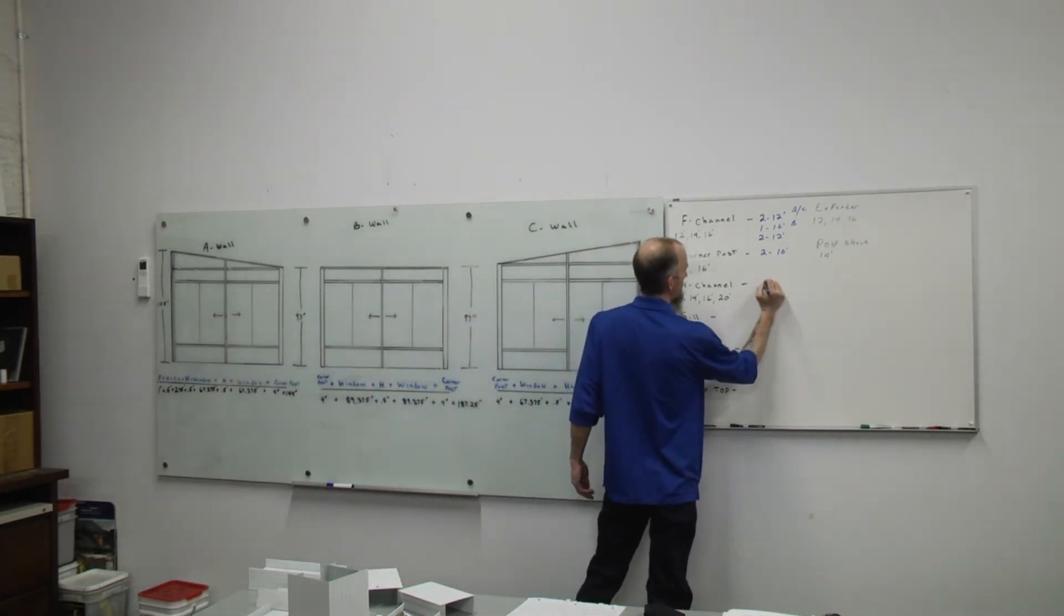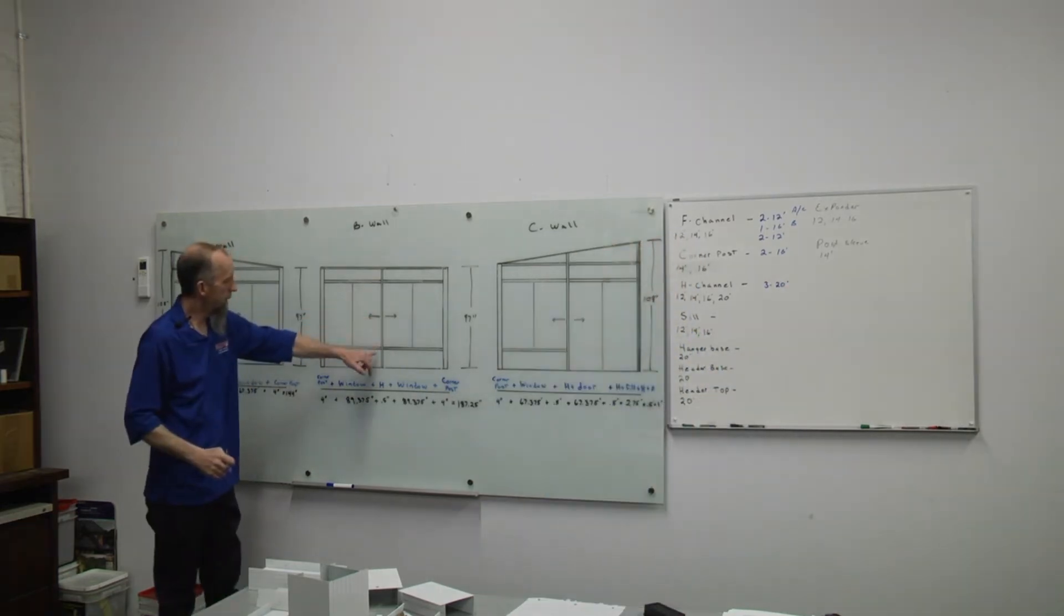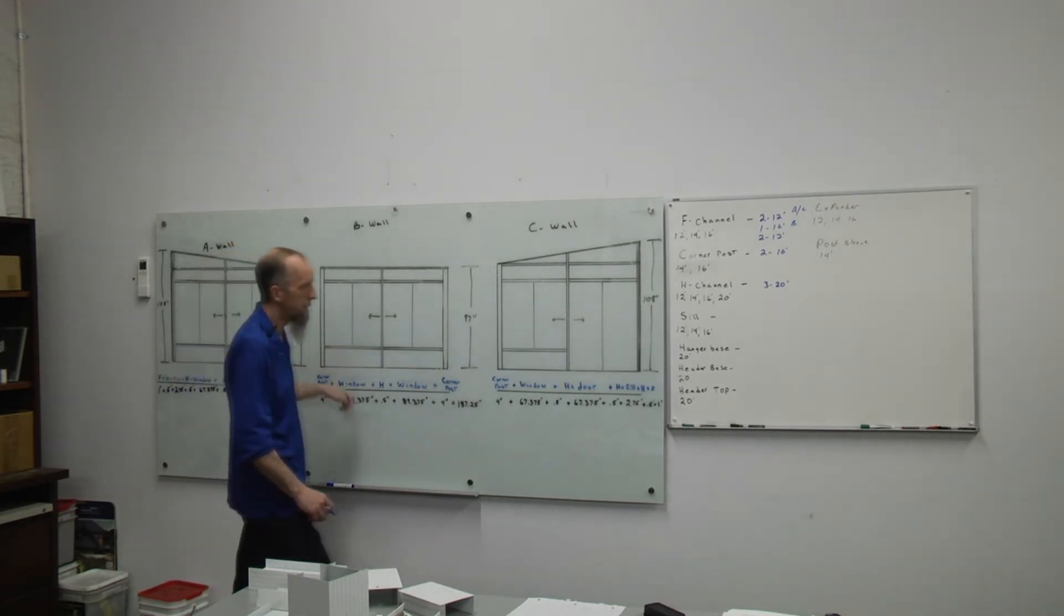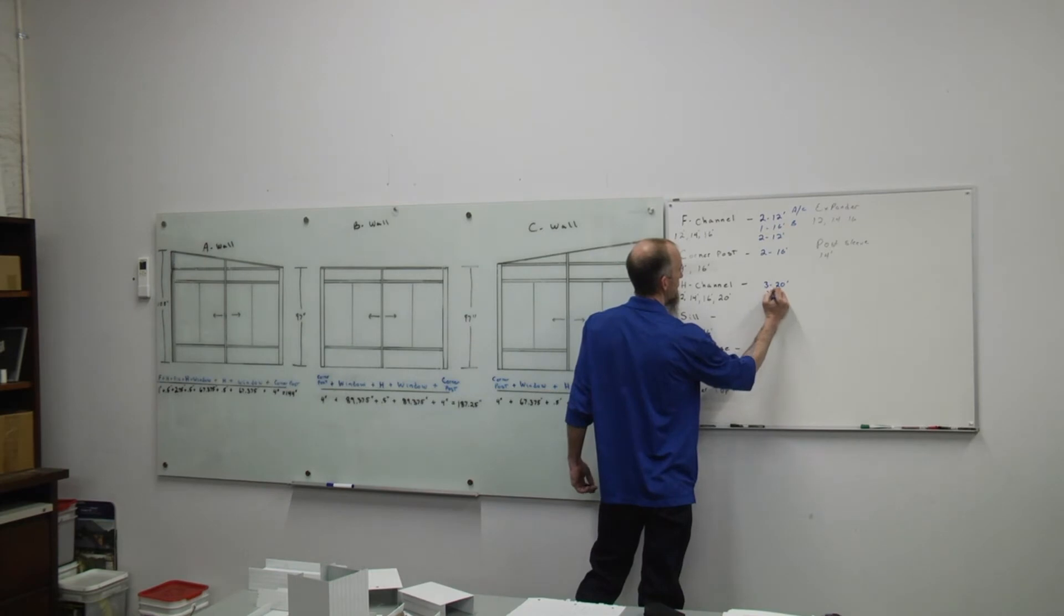So we'll need three 20 foot H's. We still have our mid H in our B wall. We'll take a 16 foot H. We'll get our B wall mid H. And that'll leave us a scrap that we can get one of our other pieces here. One 16 foot.